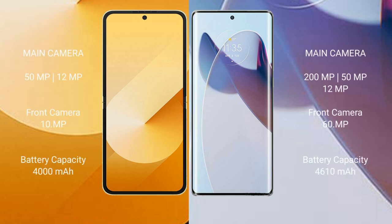Samsung Galaxy Z Flip 6 features a dual rear camera setup of 50MP plus 12MP, and a 10MP front camera. Motorola X30 Pro features a triple rear camera setup of 200MP plus 13MP plus 13MP, and a 16MP front camera. The Z Flip 6 has a 4000mAh battery with 25W fast charging, while the Motorola X30 Pro has a 4610mAh battery with 125W fast charging.